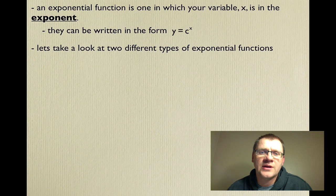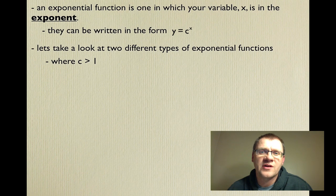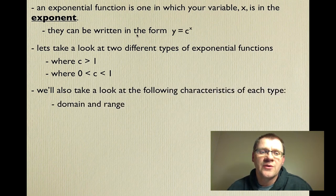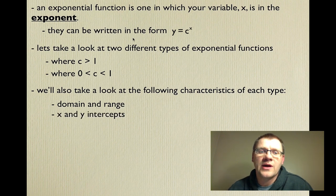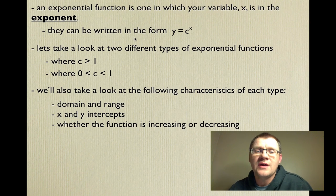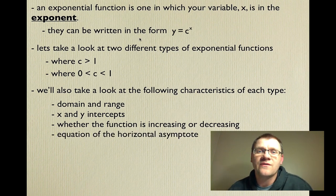We're going to look at two different types of exponential functions. One is where c is greater than one — the base is greater than one. The other is where the base is between zero and one. We'll also examine the following characteristics of each type: the domain and range, the x and y intercepts, whether the function is increasing or decreasing, and the equation of the horizontal asymptote.